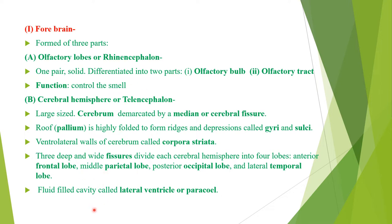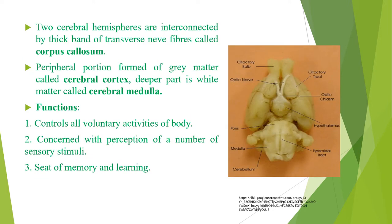Each cerebral hemisphere has a fluid-filled cavity called the lateral ventricle or paracele. The two cerebral hemispheres are interconnected by a thick band of transverse nerve fibers called corpus callosum. The peripheral portion of each cerebral hemisphere is formed of grey matter called the cerebral cortex, and the deeper part is formed of white matter called the cerebral medulla. The cerebral cortex is the highest center for many sensations and activities. The cerebral hemispheres control all voluntary activities, perception of sensory stimuli, and are the seat of memory and learning.